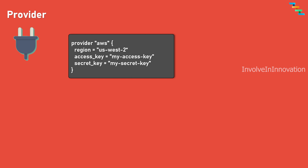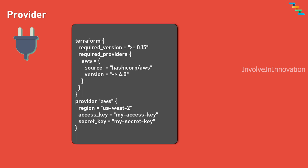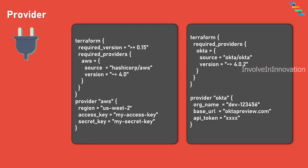It is worth noting that it's bad practice to hard-code the AWS access key and secret key directly in the configuration. The AWS provider is provided by HashiCorp, that's why we give the source as 'hashicorp/aws'. Let's see another provider provided by a third party — for example, Okta. Okta is a service which provides cloud software that helps companies manage and secure user authentication into applications. Here we provide the source as 'okta/okta', a third-party provider.